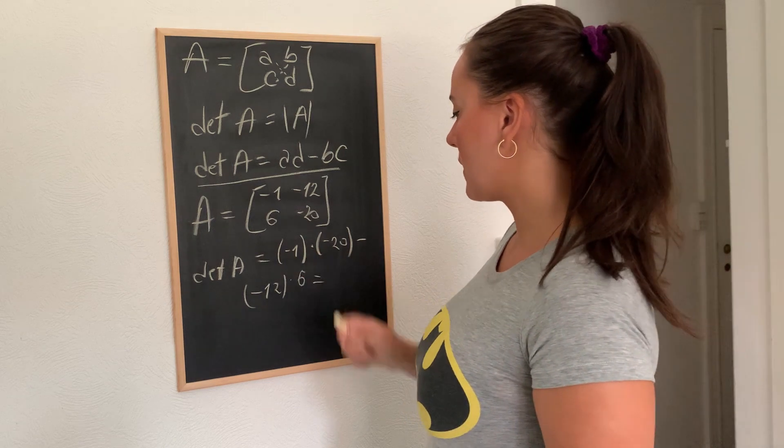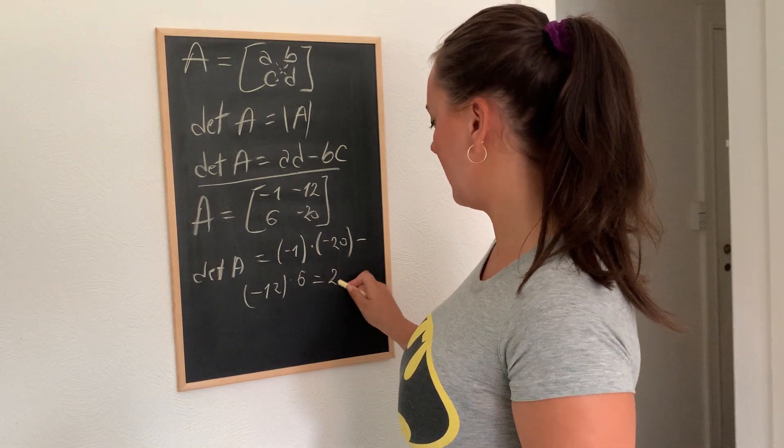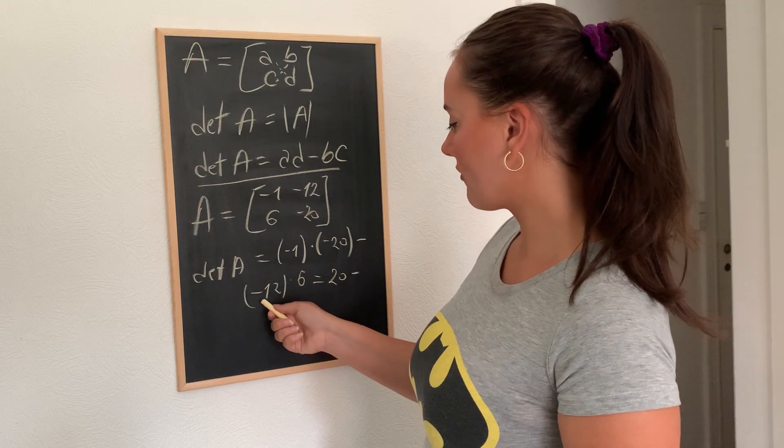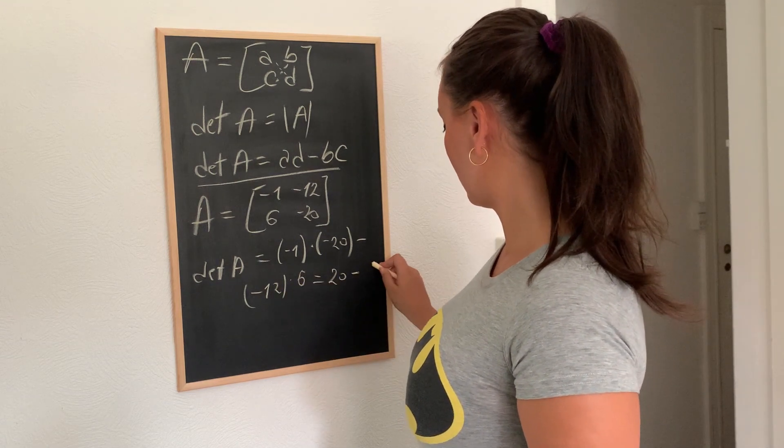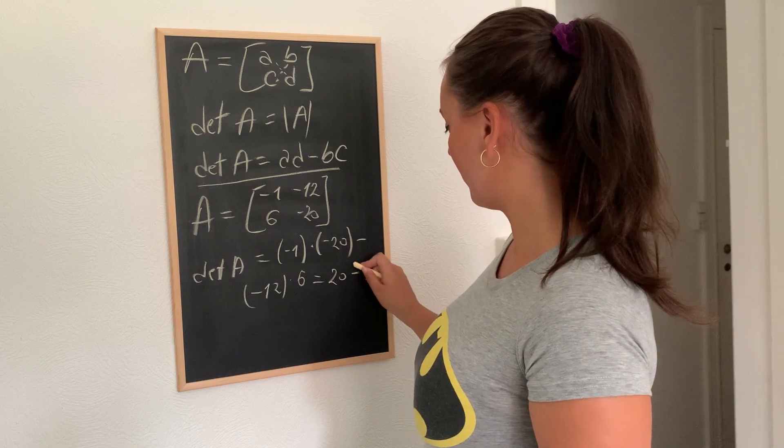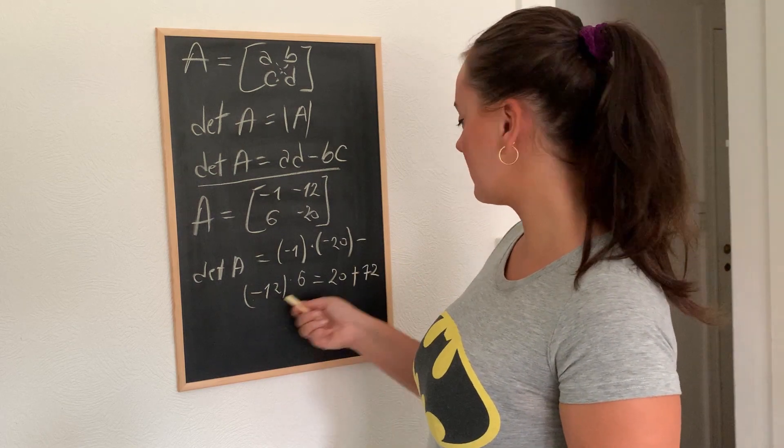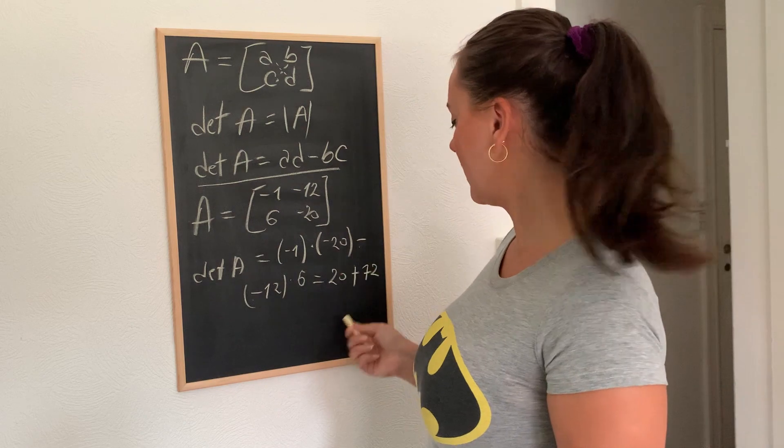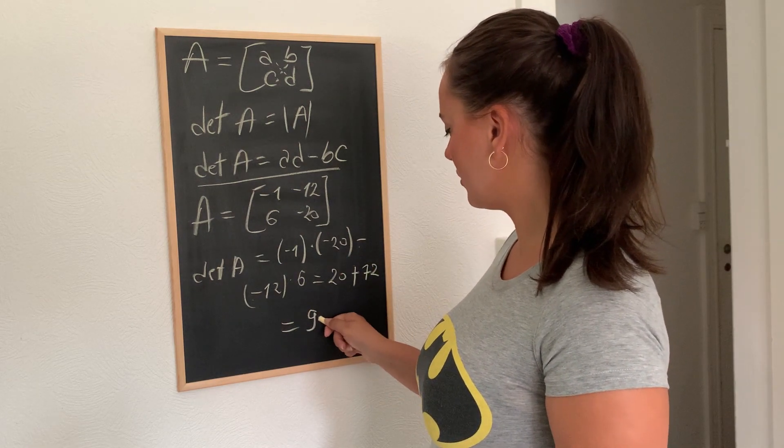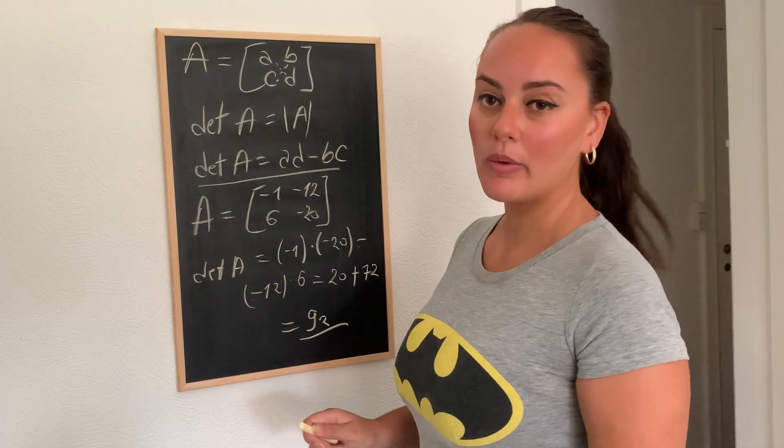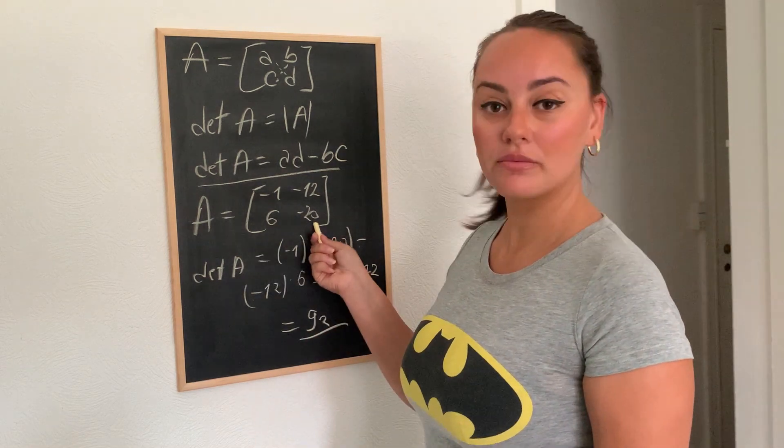All right. Minus 1 times minus 20 is 20. Minus. Minus 12 times 6 would be 72. And since we have a minus here with a minus here, it's going to be a plus. So 20 plus 72 is going to be 92. And this is the determinant of the new matrix A.